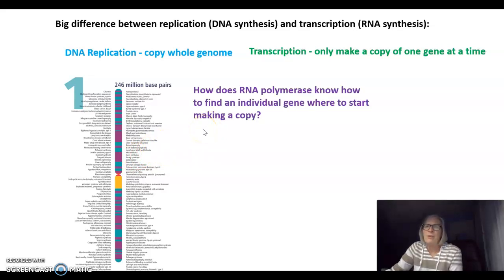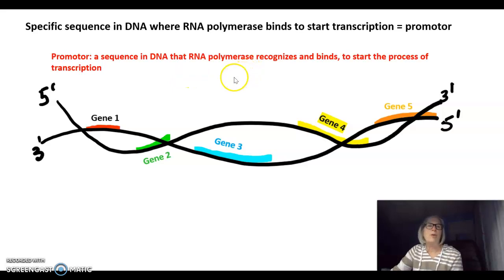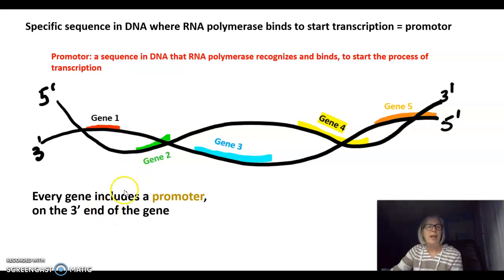So how does RNA polymerase know how to find an individual gene and know where to start making a copy? Well, there's a specific sequence in DNA where RNA polymerase can bind to start transcription, and this is called a promoter. We define a promoter as a sequence in DNA that RNA polymerase recognizes and binds to start the process of transcription. Every gene includes a promoter, and that promoter is on the three prime end of each gene.